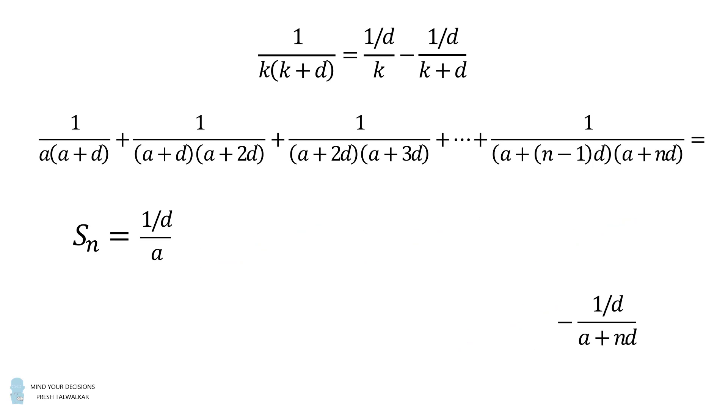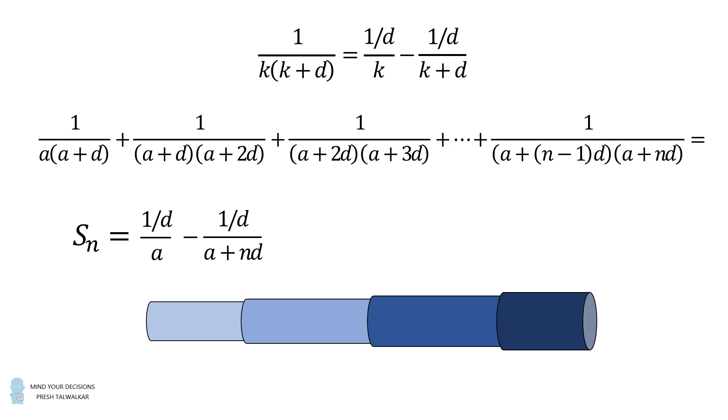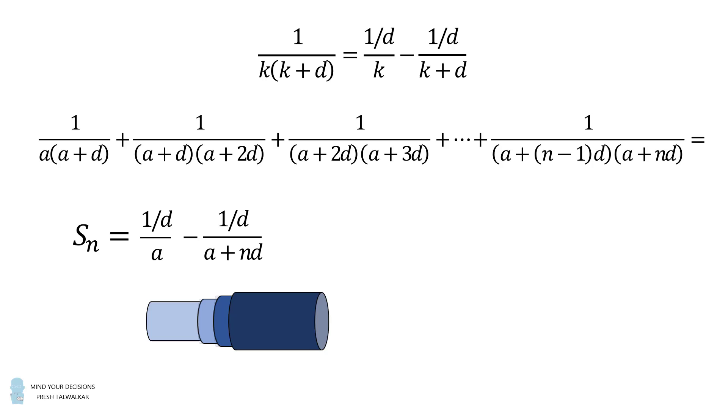So the partial sum will be equal to the following. And I want to mention this is an example of something interesting. When you have a sum where only the very beginning and the very end survive, that's reminiscent of a telescope that retracts upon itself. For this reason this is known as a telescoping sum.